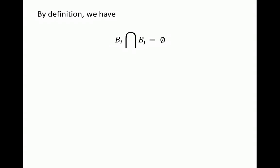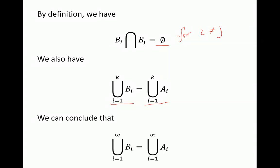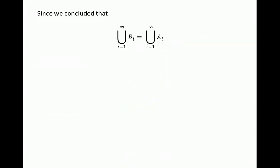By definition, the intersection of Bi and Bj for i not equal to j is an empty set, because each event B is the new part not covered by previous events. We also have that the union of all B events represents the same elements as the union of all A events. Since these unions are equal and represent the same events, their probabilities must also be equal.